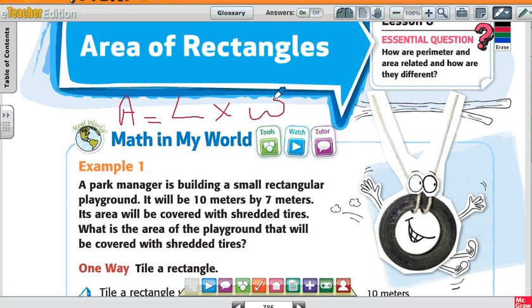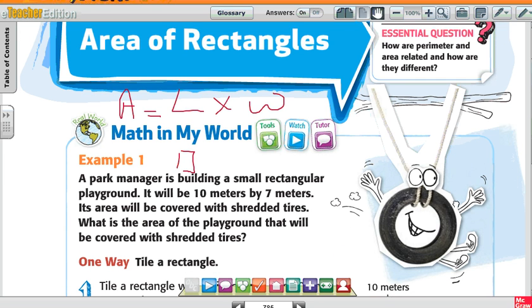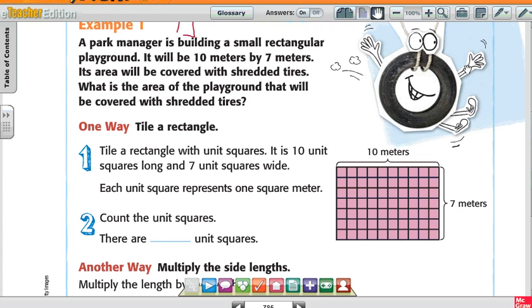If the unit squares inside are one, I can just count all the unit squares, right? But if the rectangle doesn't have any squares inside, if I don't see squares in here and it's just a solid color, then yeah, I'm going to multiply 10 times 7. But if I just do this, I can just count all the squares. Tile the rectangle with unit squares.